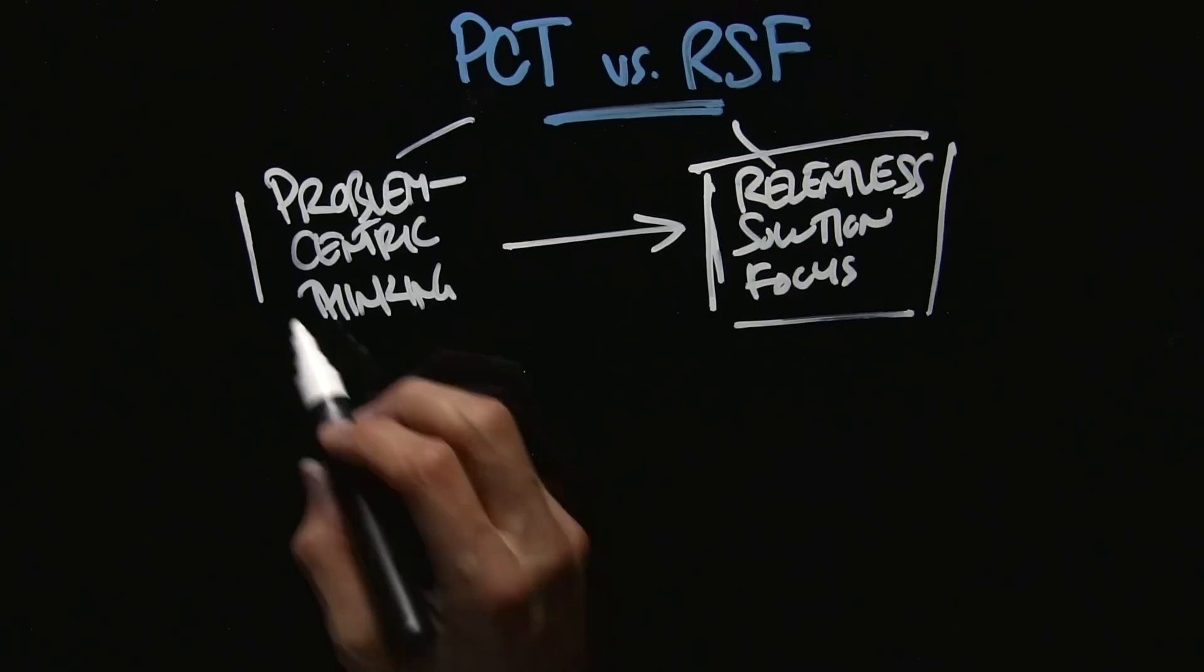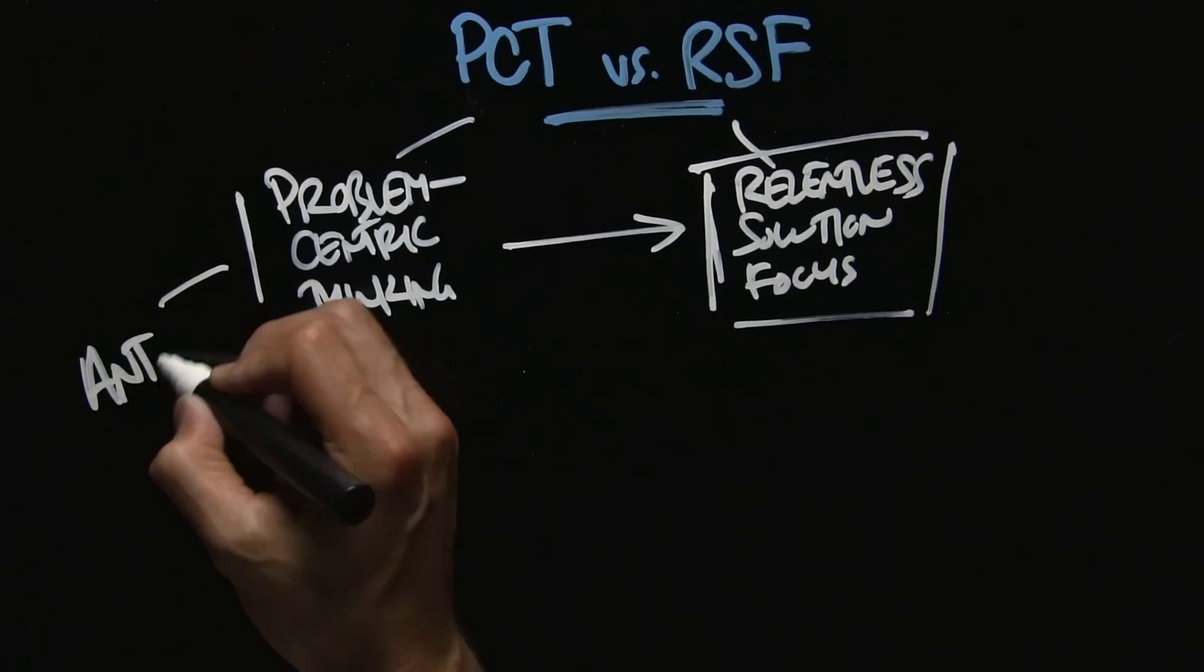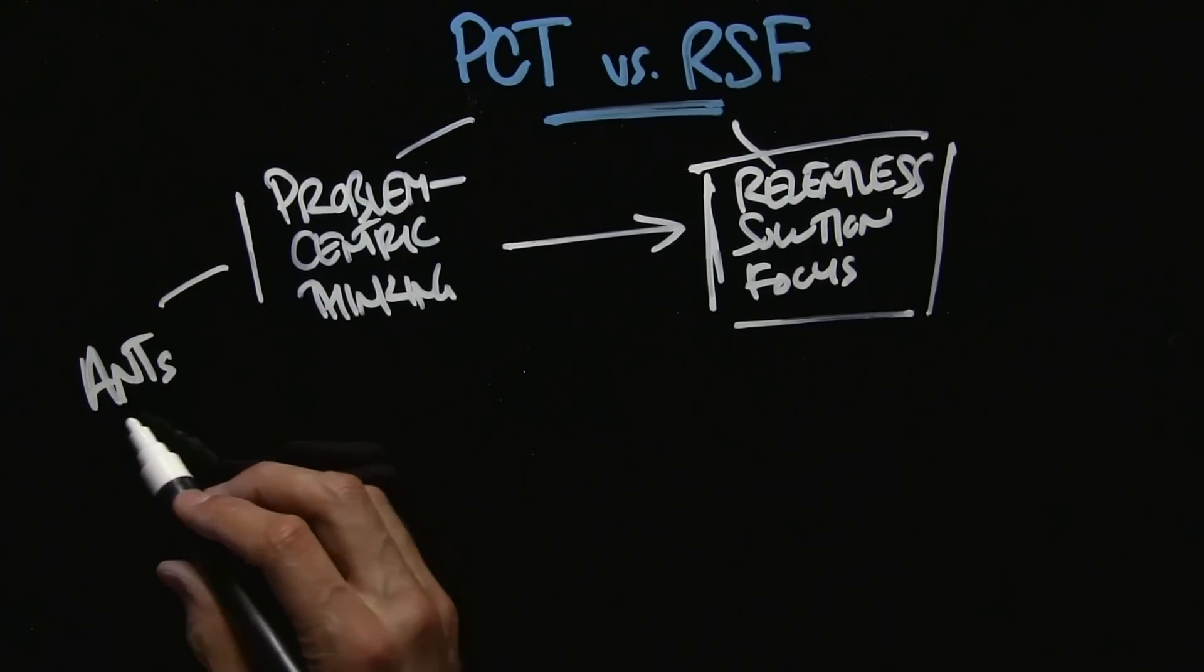PCT versus RSF. Now the reality is that we actually evolved to have what Daniel Amen calls ANTs, automatic negative thoughts.